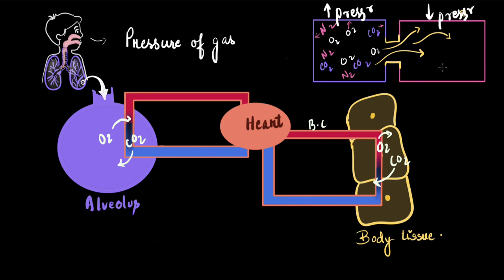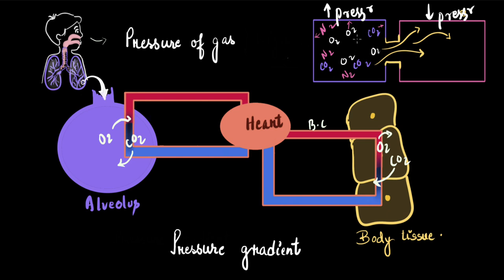This is exactly what drives gases from one part of our body into another — there is a difference in pressure between the two parts. Whether it's the alveolus and the blood, or the tissues and the blood, gases can only diffuse in or out because of a pressure difference. For any gas to move from one part to another, there must be a pressure difference, also called a pressure gradient.